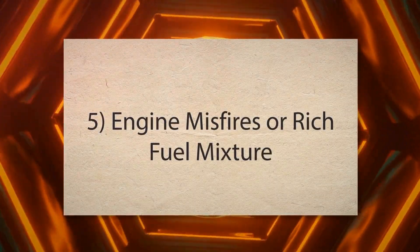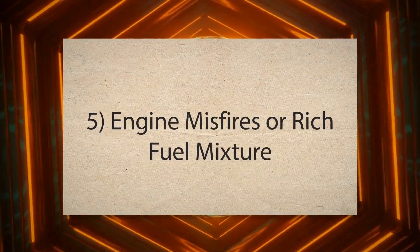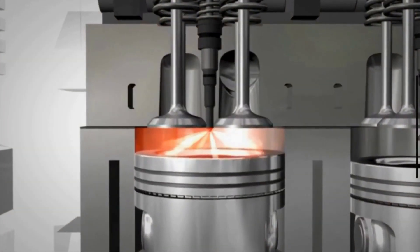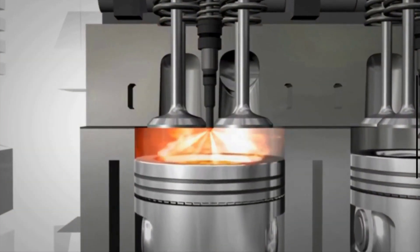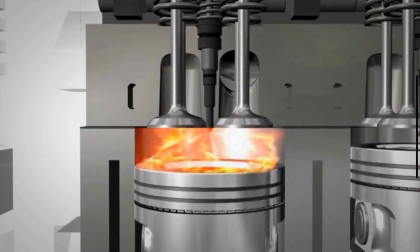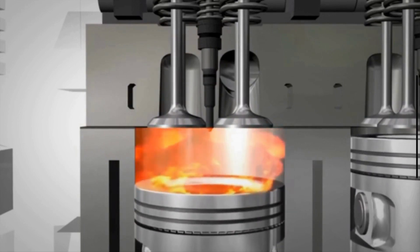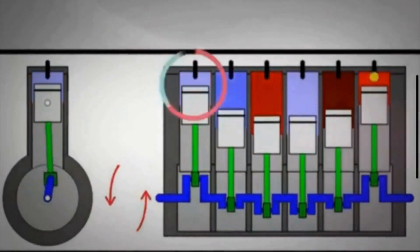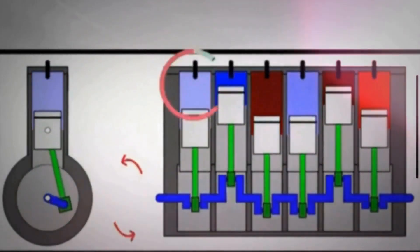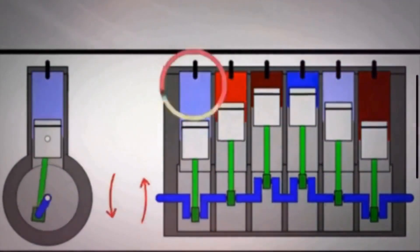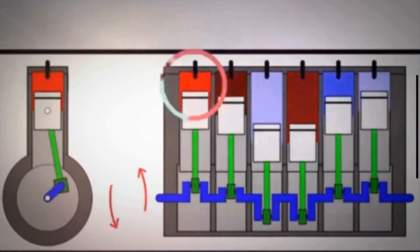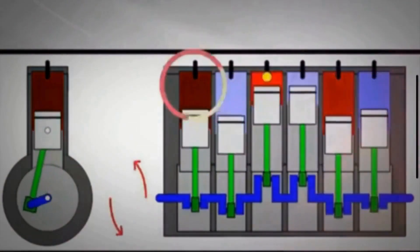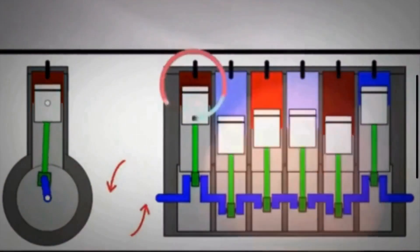5. Engine Misfires or Rich Fuel Mixture: An engine misfire or running too rich can result in unburned fuel entering the exhaust system. This can cause the downstream oxygen sensor to detect higher-than-normal levels of oxygen in the exhaust gases, triggering the PO-141 code.